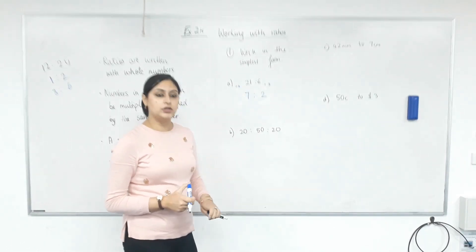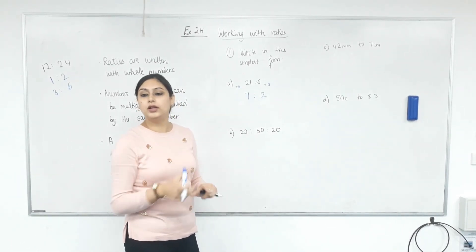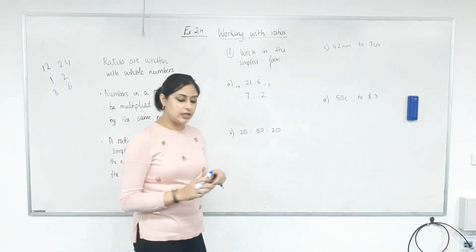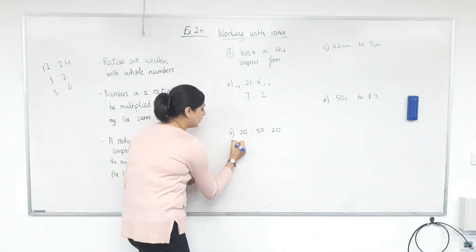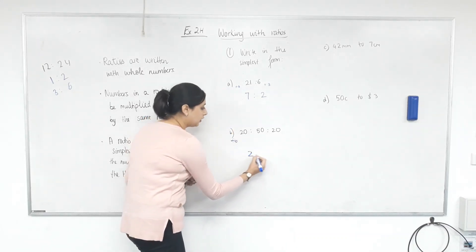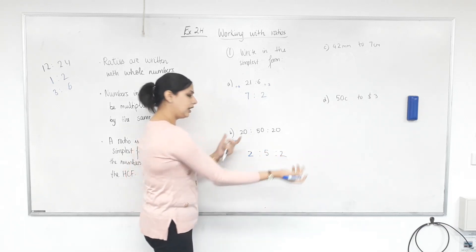20 is to 50 is to 20. So highest common factors of all numbers. 20, 50, and 20. 10. Do you not divide everything by 10? Yes. So you're dividing everything by 10. So 20 divided by 10 is? 2. 50 divided by 10? 5. 20 divided by 10? 2. Clever class.